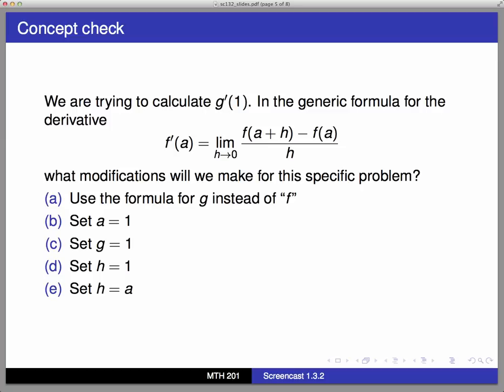Also, I need to note that where it says a in the definition, what that refers to is the point where I want the derivative. This is the point at which I want the instantaneous rate of change, or the point at which I want to see the tangent line.